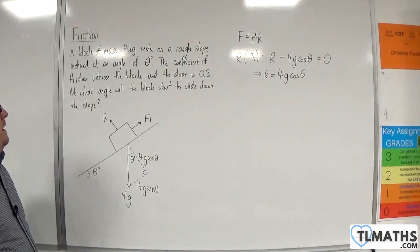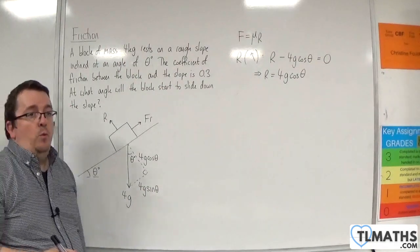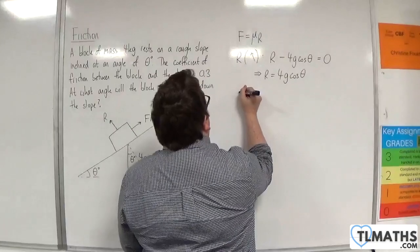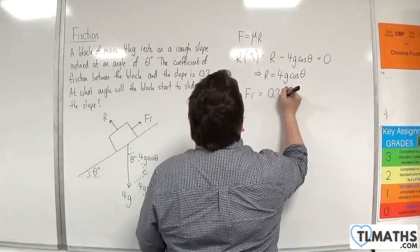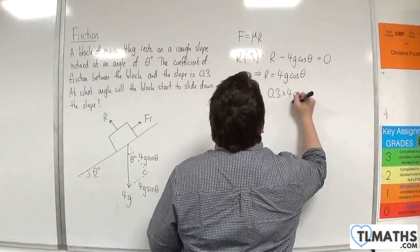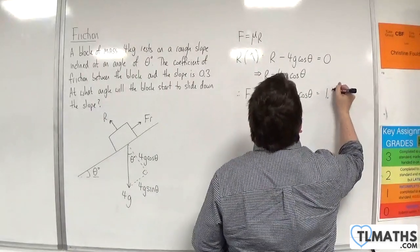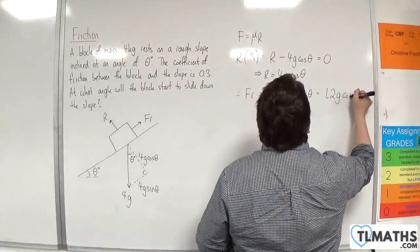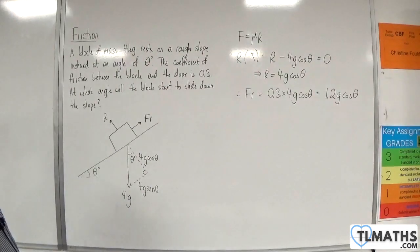Okay, now I know that mu is 0.3, so this allows me to now work out the friction. So therefore the friction will be equal to 0.3 times by 4g cosine theta, which is 1.2g cosine theta. So that's my friction.